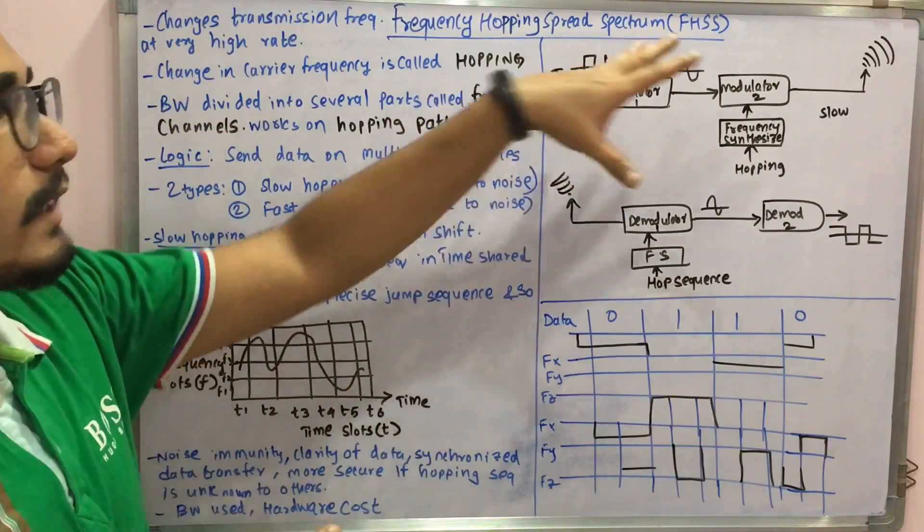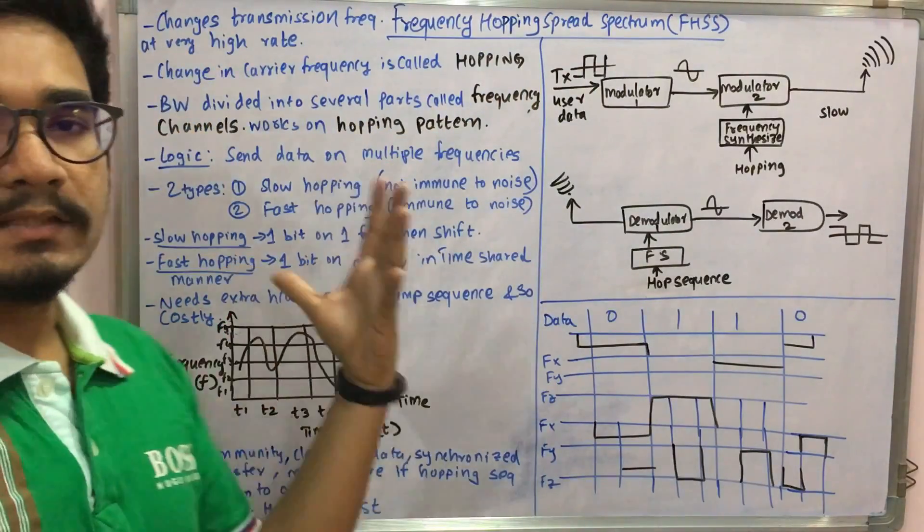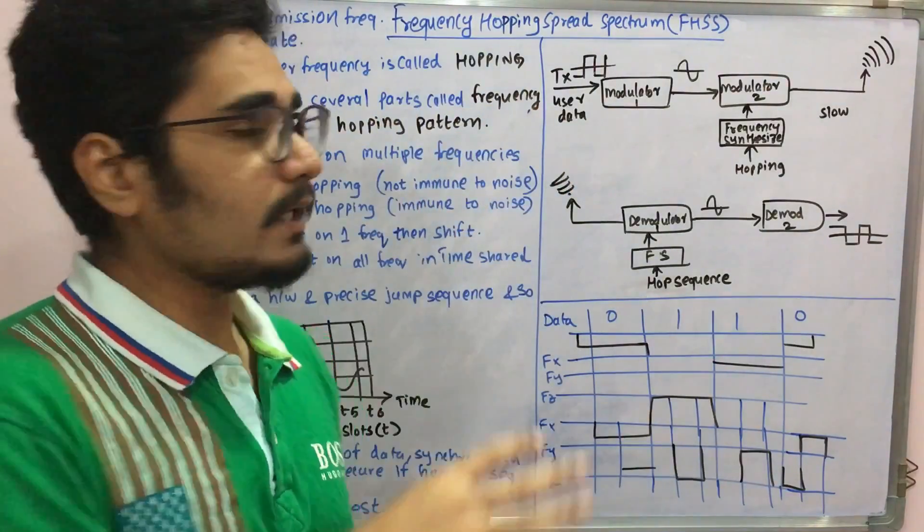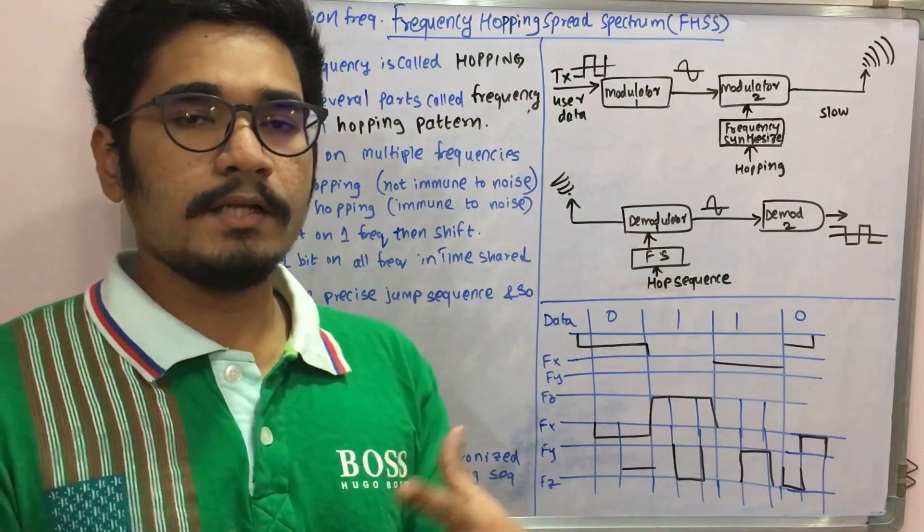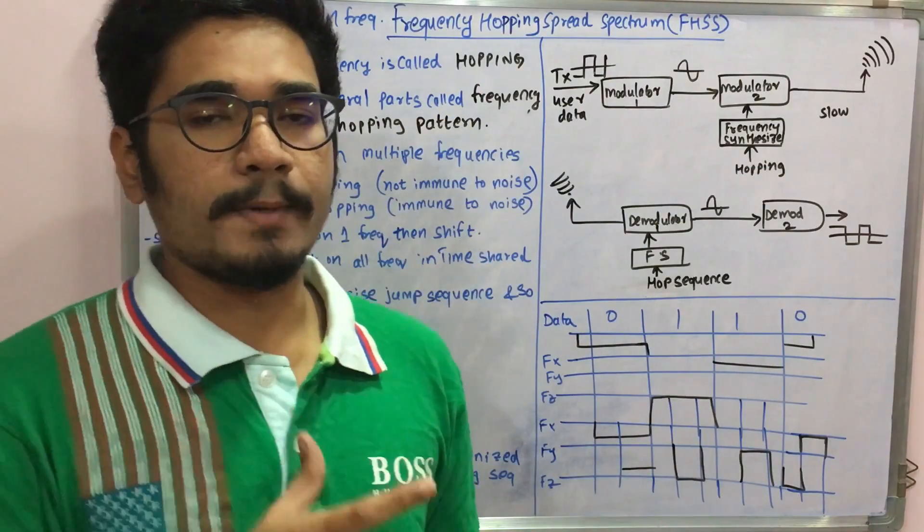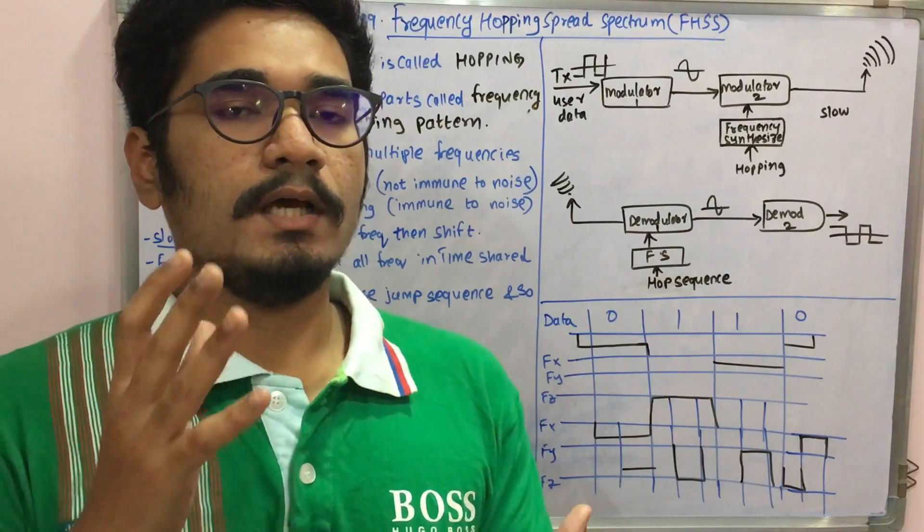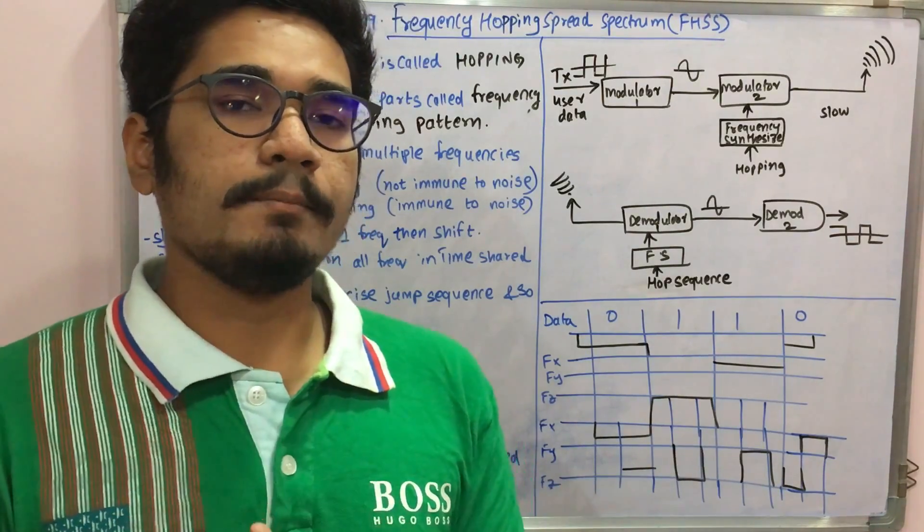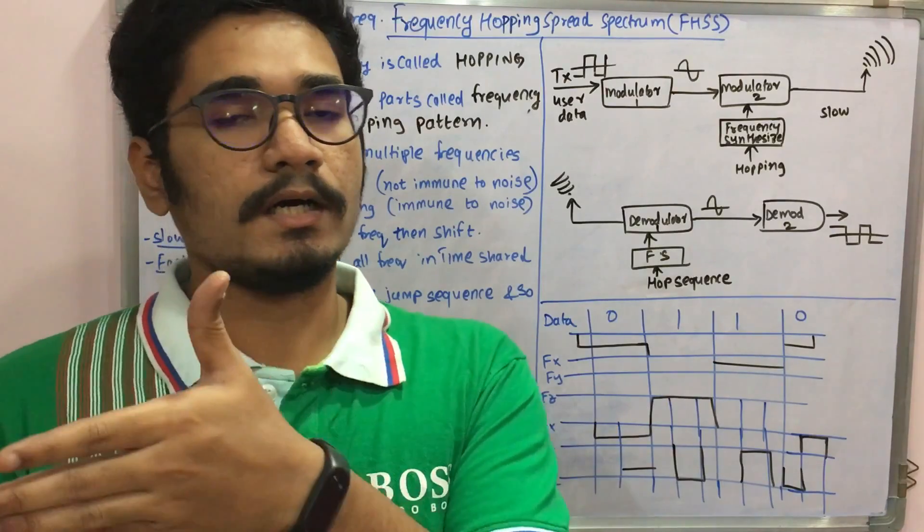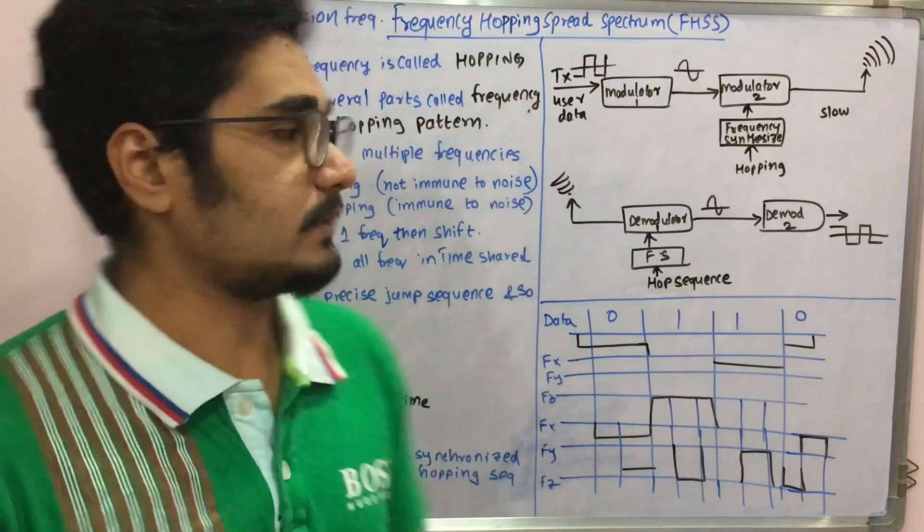pattern which is agreed by the transmitter as well as the receiver. They mutually understand and accept this pattern and decide they have to follow this pattern to transfer the data. They need to agree upon this pattern because the data should be synchronized from both ends, and only then the data can be sent in a proper manner without any interference of noise.